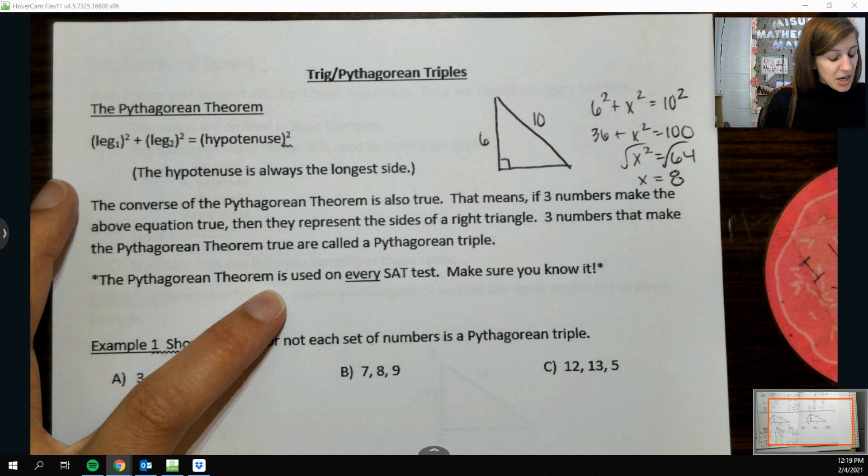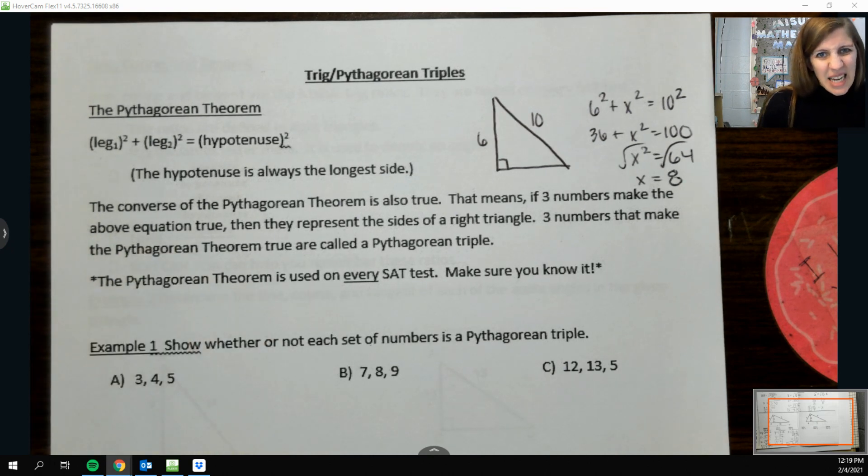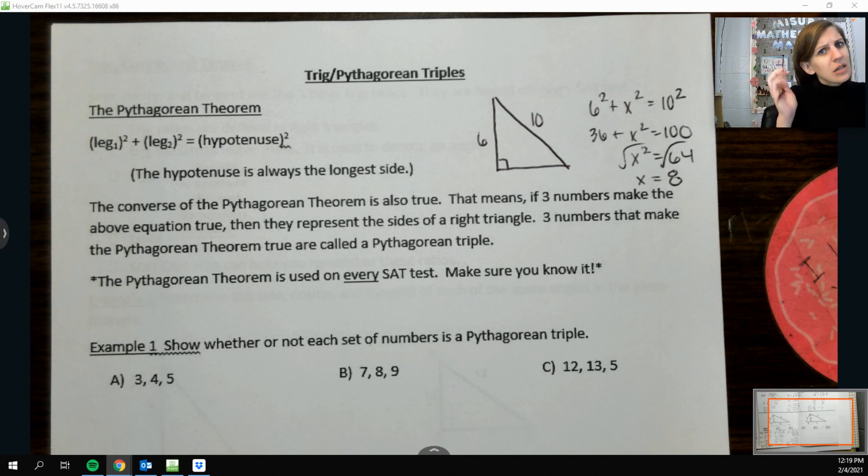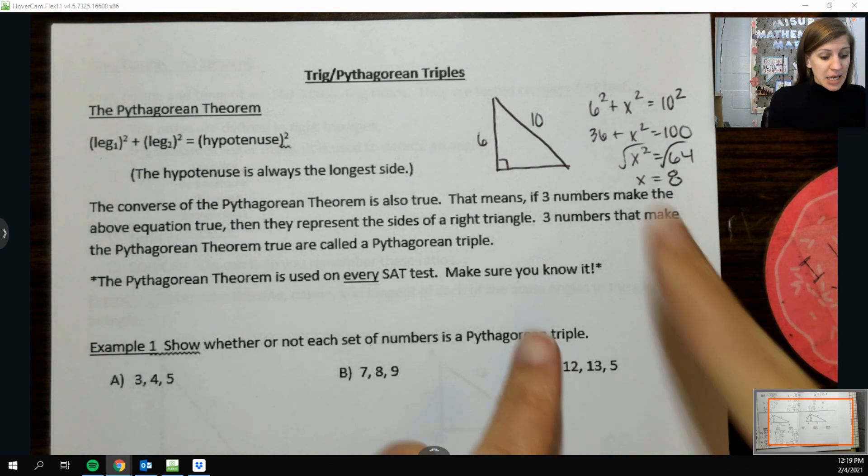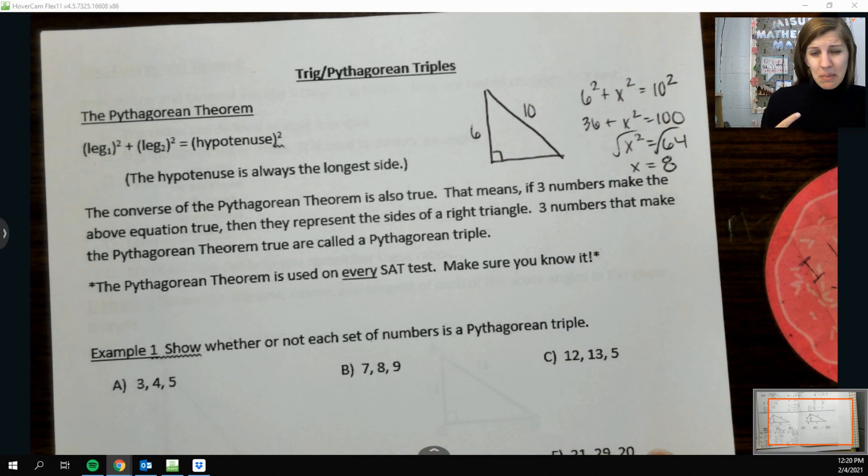It says here that the Pythagorean theorem is used on every SAT test. Sometimes in sneaky hidden ways. So it is important to know because you can use it in other ways than you would think. Understanding perfect squares that form a triple are really good because this right here, I came up with this six and ten real quick in my head because I know that 6, 8, and 10 are a Pythagorean triple. Like those three numbers just are always a pair.